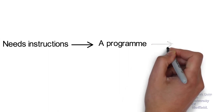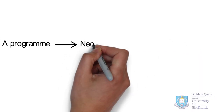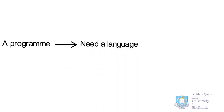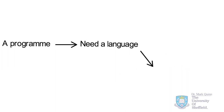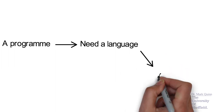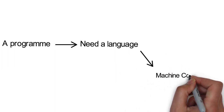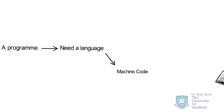A list of such instructions is what we refer to as a program. This begs the question: what language should these instructions, or this program, be written in? Ultimately our instructions need to be in a language that the computer can understand. This is referred to as machine code.